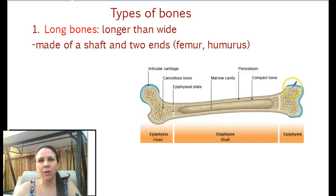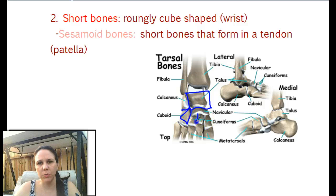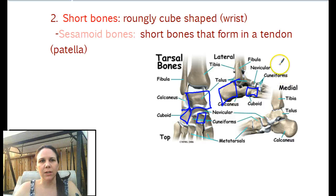Long bones include the femur, humerus, radius, ulna, tibia, fibula — all those. Short bones are relatively cube-shaped, so your foot is just made up of a whole bunch of cubes, and those are all short bones.